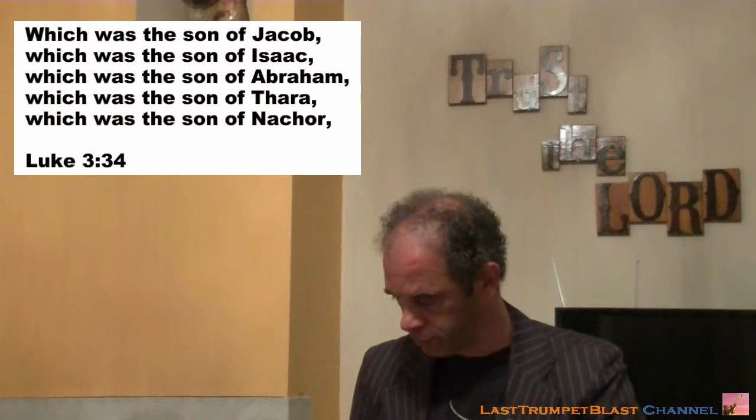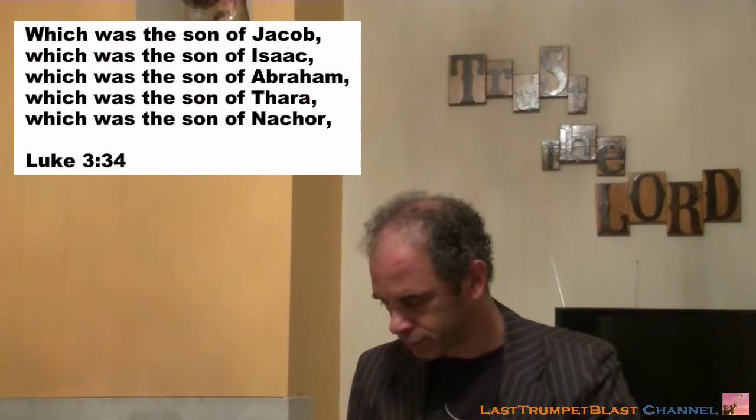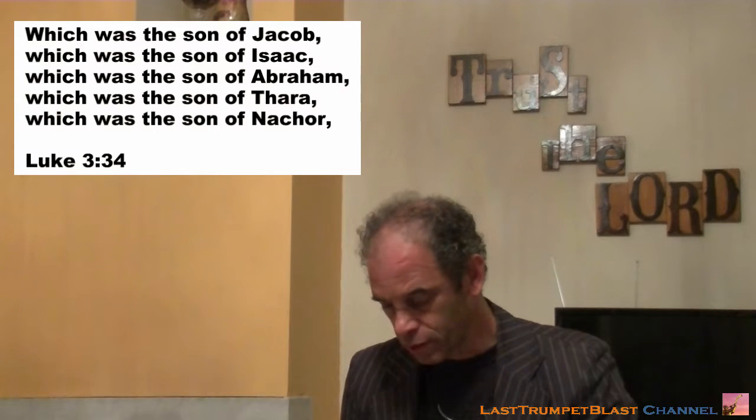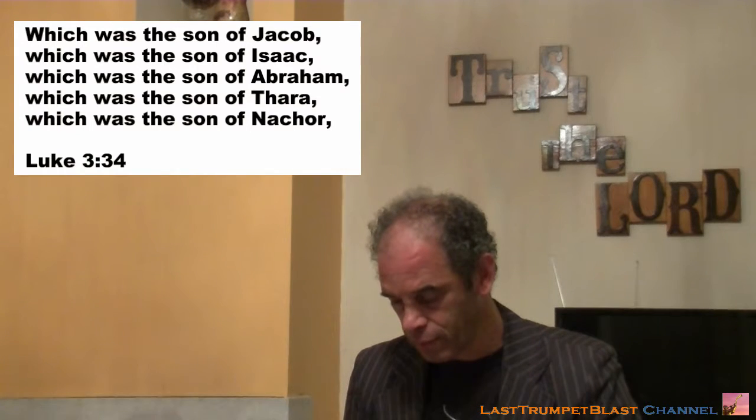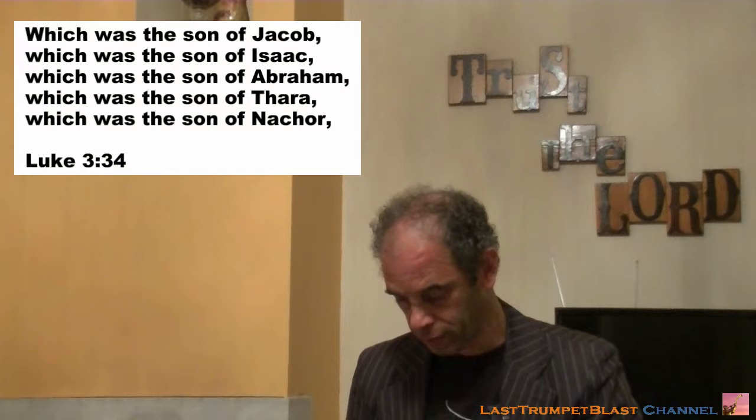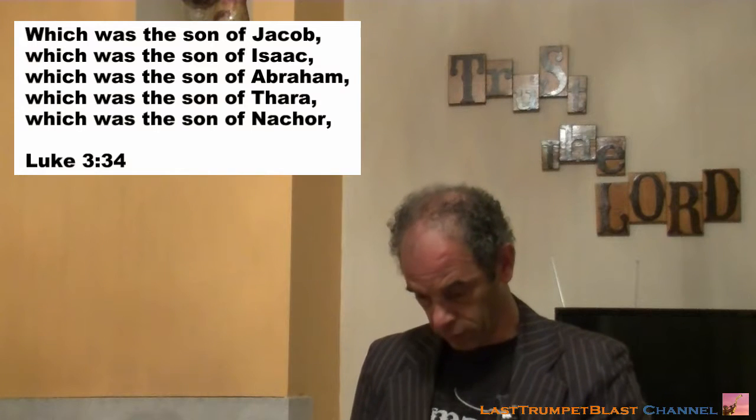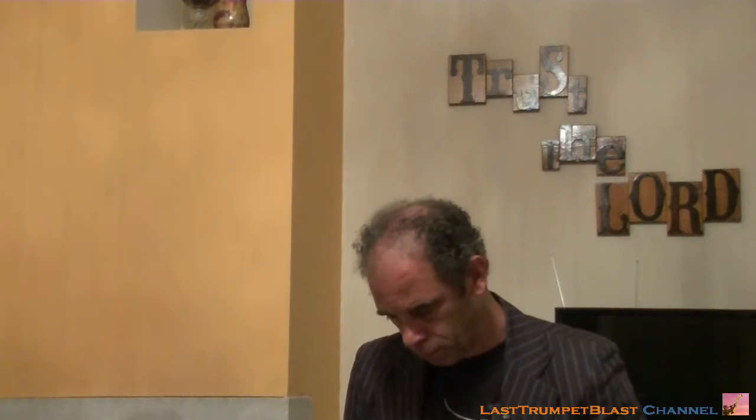It says, 'which was the son of Jacob, which was the son of Isaac, which was the son of Abram, which was the son of Tera.' So Tera was the last one on our chart, number 19, and his son was Abraham. So what does the Bible say about Abraham? Well, a whole lot, of course.